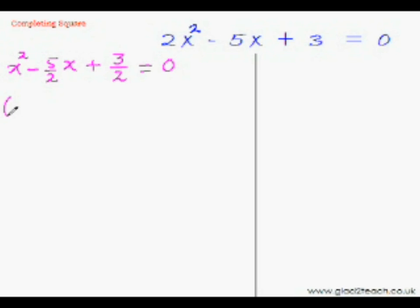Now just put a bracket and in that put just x. And now find the half of this coefficient and put it here. So half of minus 5 over 2 would be minus 5 over 4. And now you can put the square at the top of the bracket.